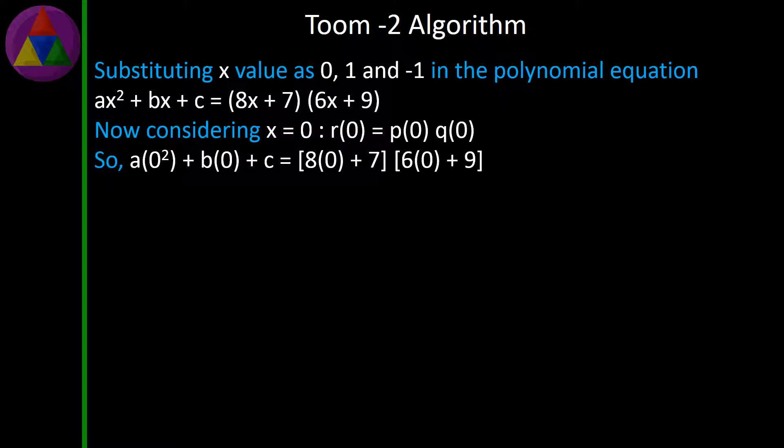So, [8(0) + 7][6(0) + 9] = [8 + 7][6 + 9]. The solution is c = 7 × 9. Therefore, c = 63.